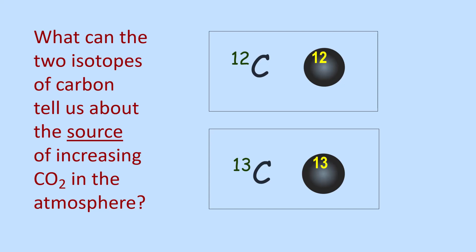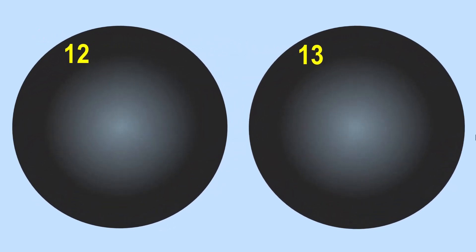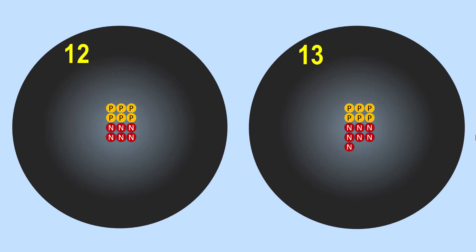The two isotopes the studies are concerned with are carbon-12 and carbon-13. Let's make sure we remember what the term isotope refers to. Carbon-12 refers to an atom of carbon with six protons and six neutrons in the nucleus, and carbon-13 refers to a carbon atom with six protons and seven neutrons in the nucleus. The term isotope refers to atoms of the same element with different amounts of neutrons.